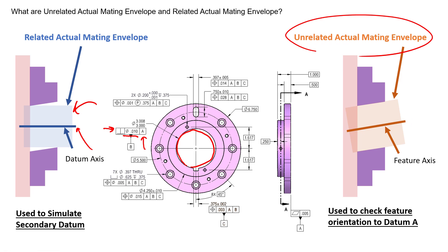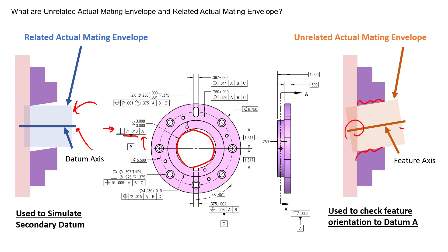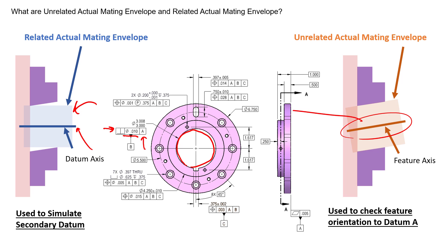In the CMM world, this is going to be the maximum inscribed cylinder. If there is any form error, it's going to sit on the high points of that form error and adhere to any orientation or location error that cylinder does have. The axis of that perfect cylinder that expanded inside this feature is our feature's axis. We can then use this axis within this tolerance zone to check our perpendicularity. This orientation error of the axis represents both perpendicularity and position error if we were controlling the position of this feature.